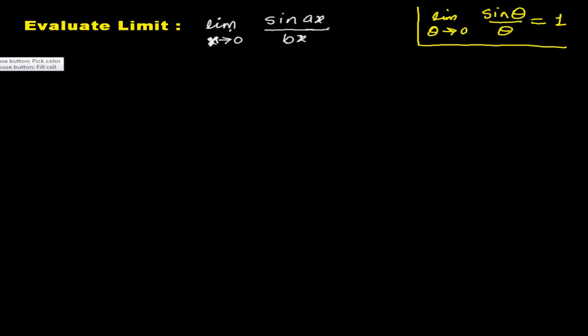How to solve this problem? Look, here our angle is ax, but in the denominator we don't have ax, we have bx. There's a b here which we need to remove, we need to separate it.